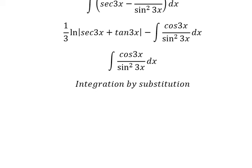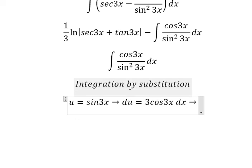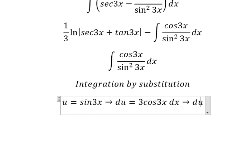So I will put u equal to sine 3x. Later we do first derivative for both sides, you got 3 cosine 3x dx. Because we don't have number 3 here, so we need to divide both sides by 3.